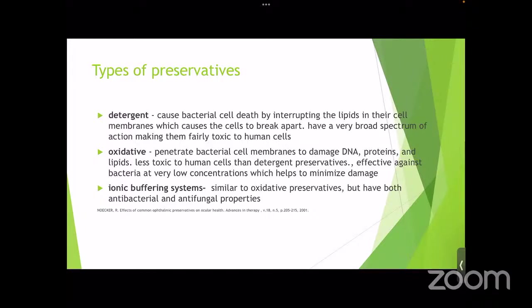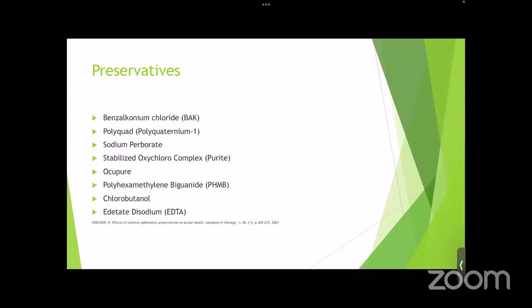Oxidative preservatives penetrate the bacterial cell membrane and damage DNA, proteins, and lipids. They are less toxic to human cells than detergent preservatives and effective against bacteria at very low concentrations. Ionic buffering systems are similar to oxidative preservatives but have both antibacterial and antifungal properties. The most commonly used preservatives are BAKs, polyquads, sodium perborates, stabilized oxychloro complex (Purite), Ocupure, PHMBs, chlorobutanols, and EDTAs.